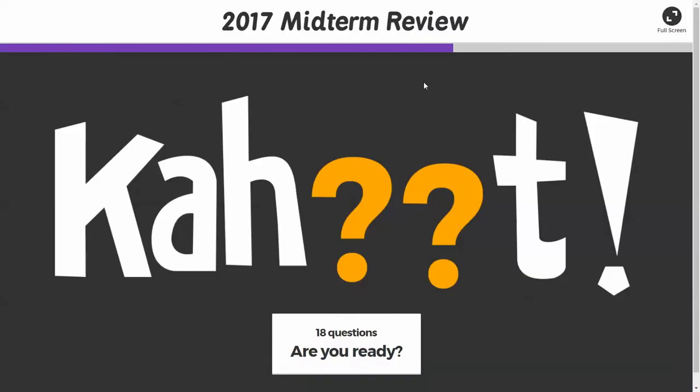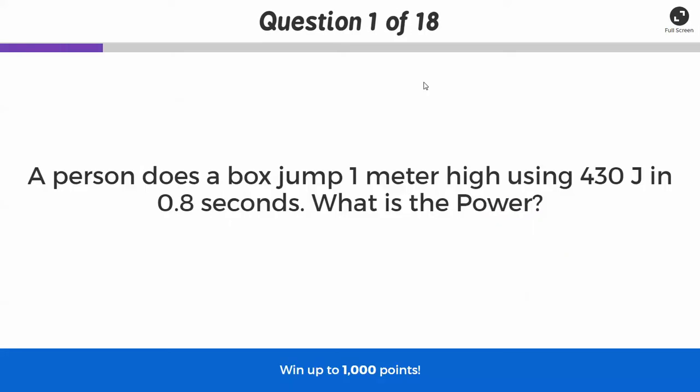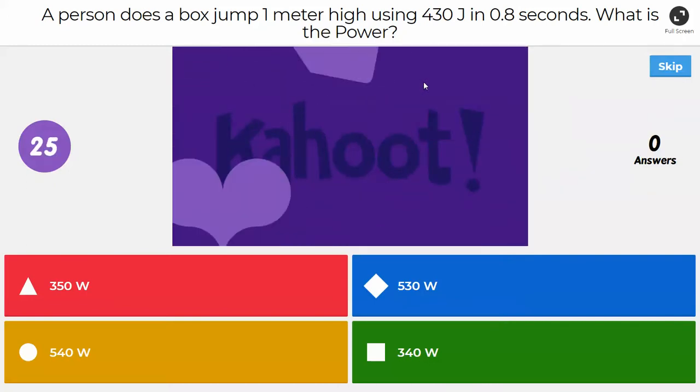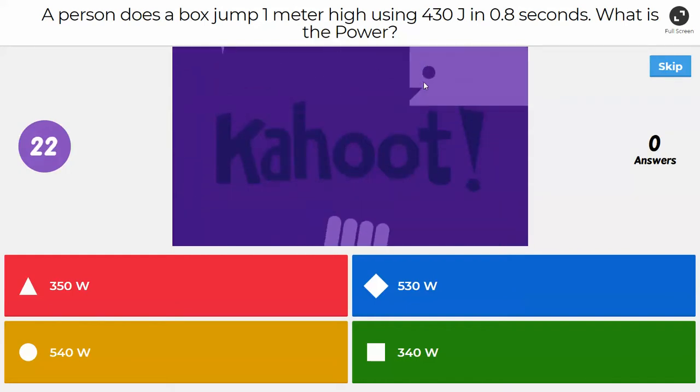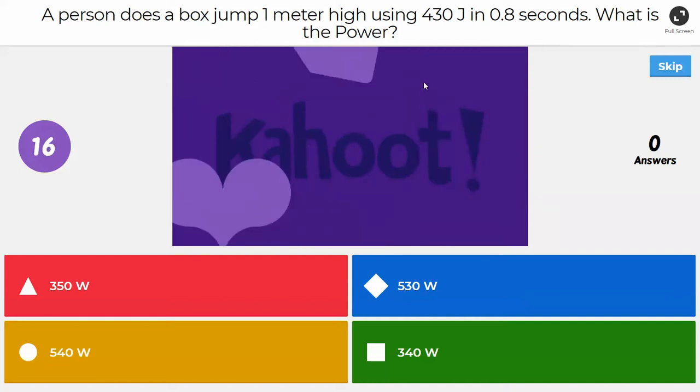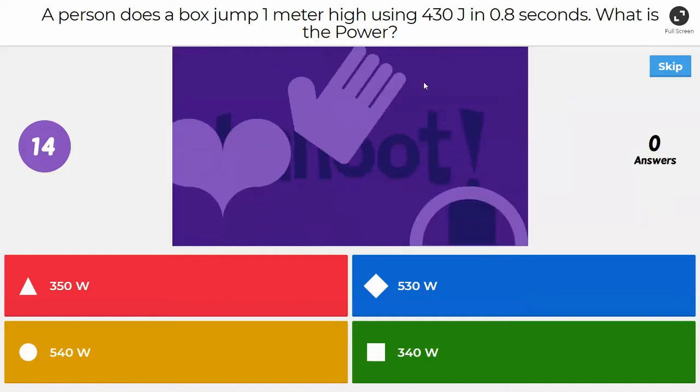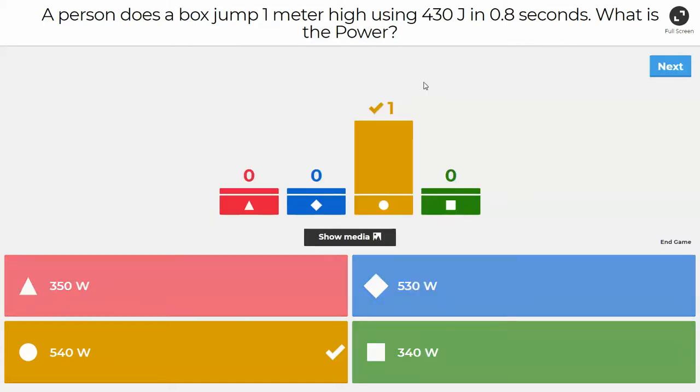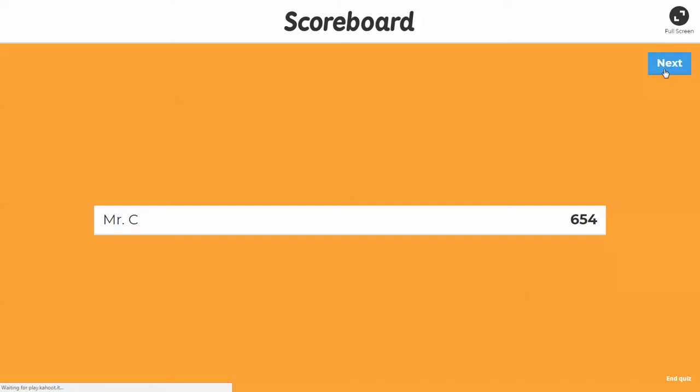Okay, so we're going to start with the first question. Question number one, a person does a box jump one meter high using 430 joules in 0.8 seconds. What is the power? So you may recall that the power formula is work over time, right? So you know in this case how much work he does, or she does in this case, and how long it takes them to accomplish this. So what is the power? So if you said 540 watts, that is correct. Dividing 430 by 0.8 gives you a number between 530 and 540. We would round up to 540 due to significant digits in this case. All right, so next question.